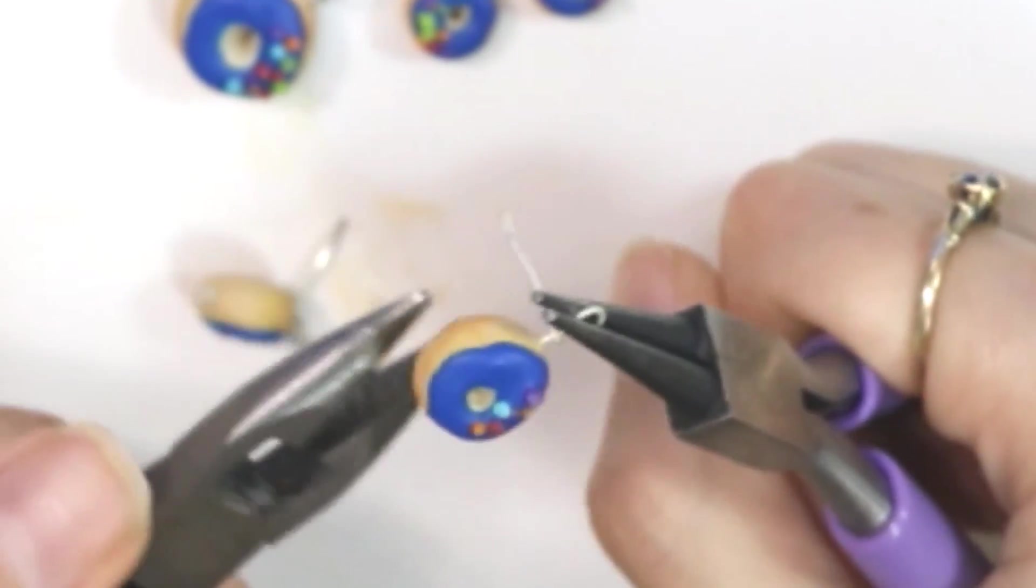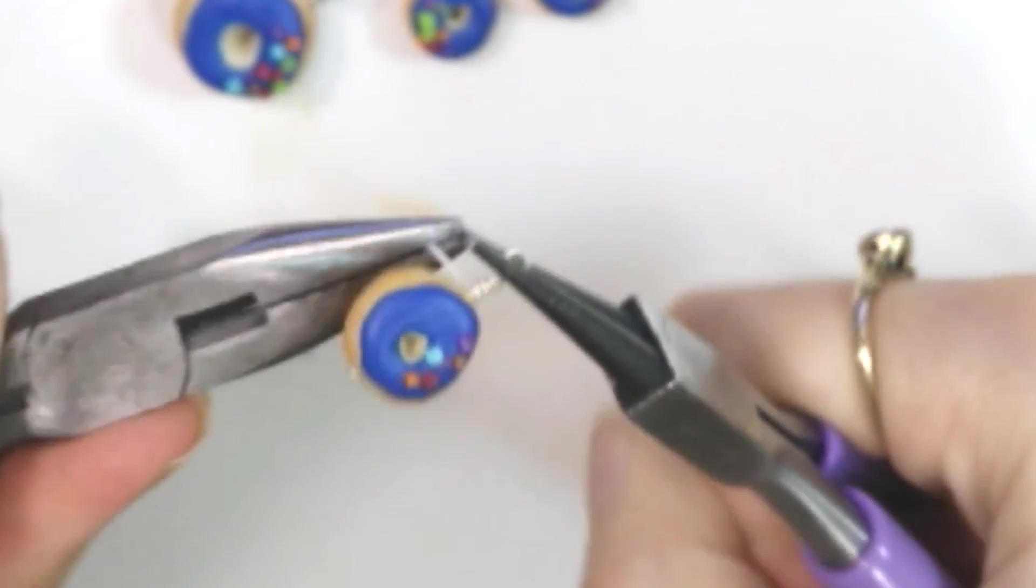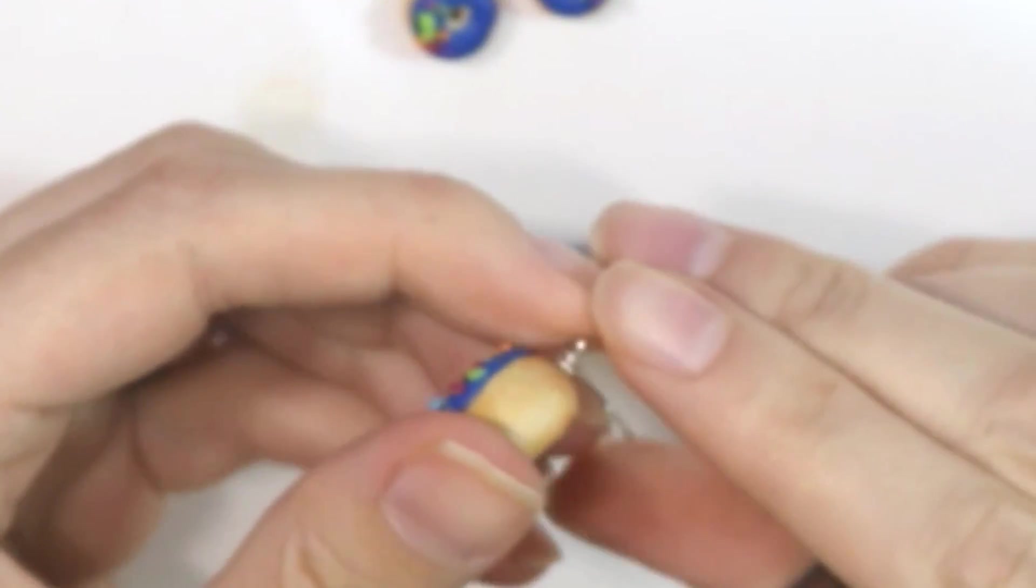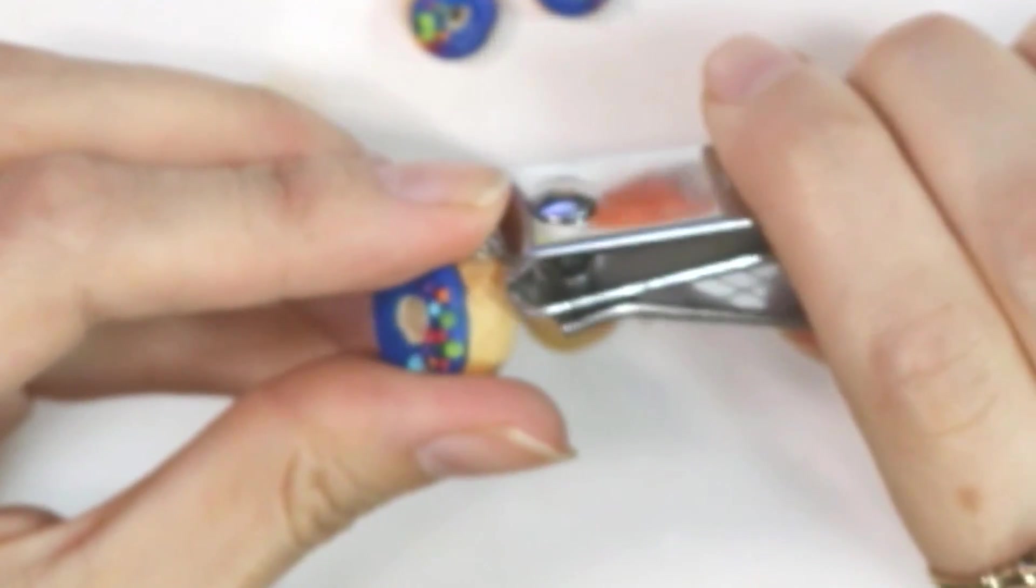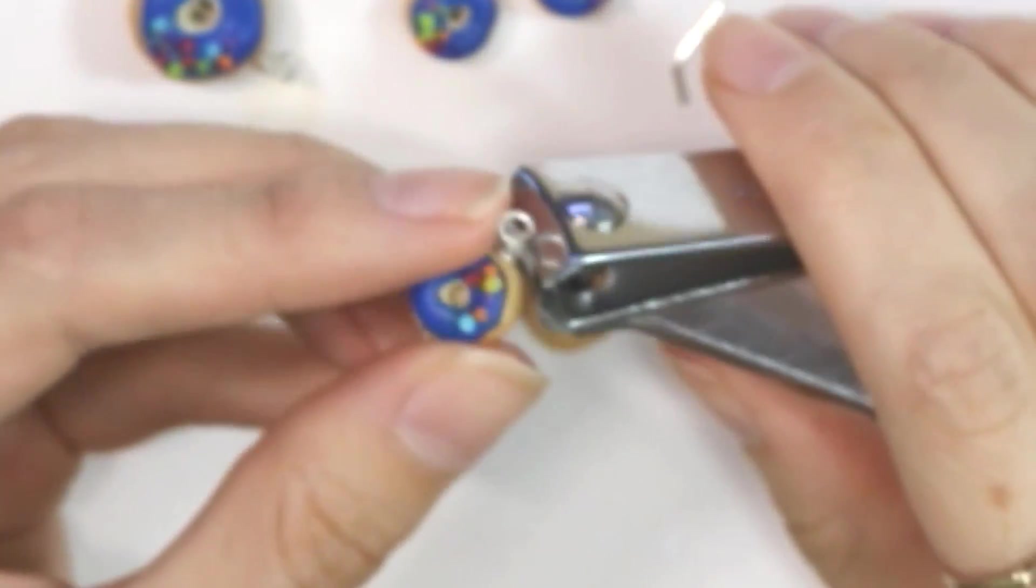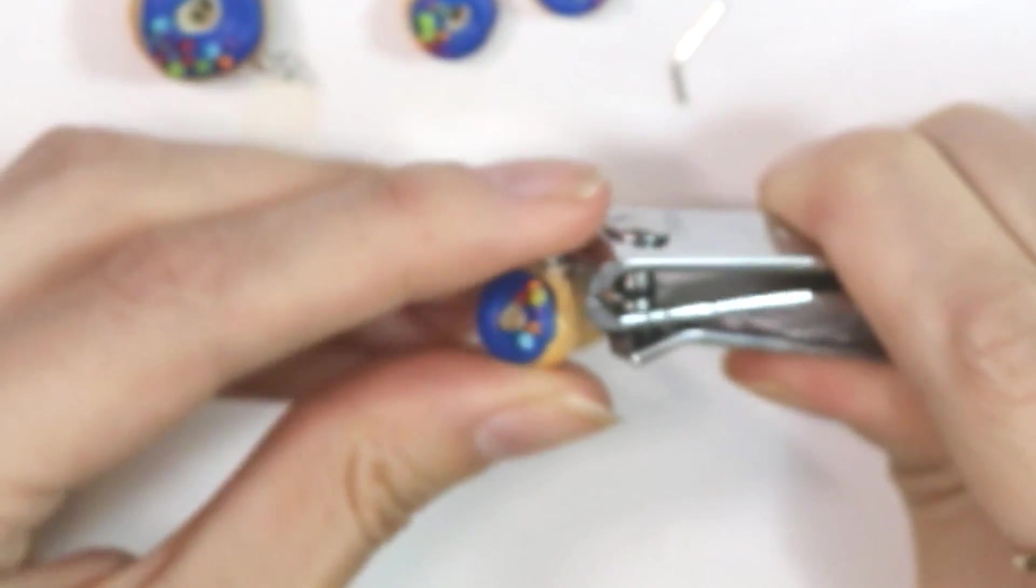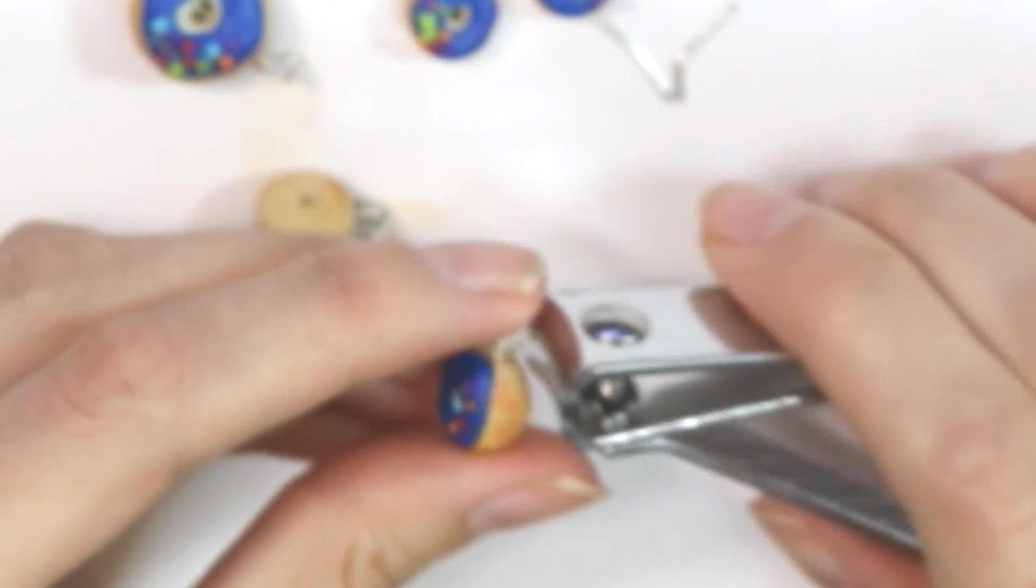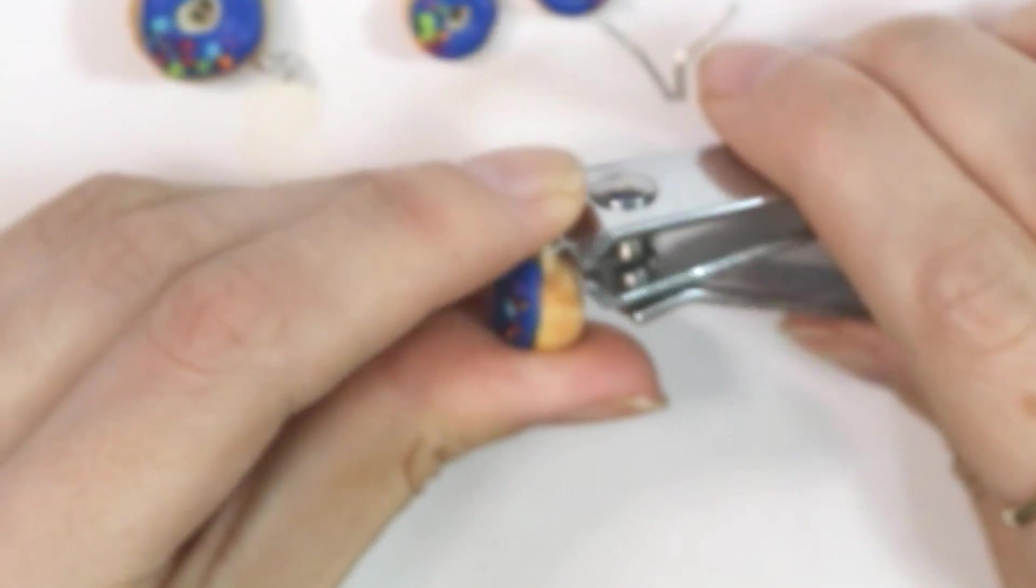What I like to do is use nail clippers that I have specifically for crafting because they are not that sharp anymore. Cut off the excess because you can get a nice close cut with these. That's a special little trick for you.